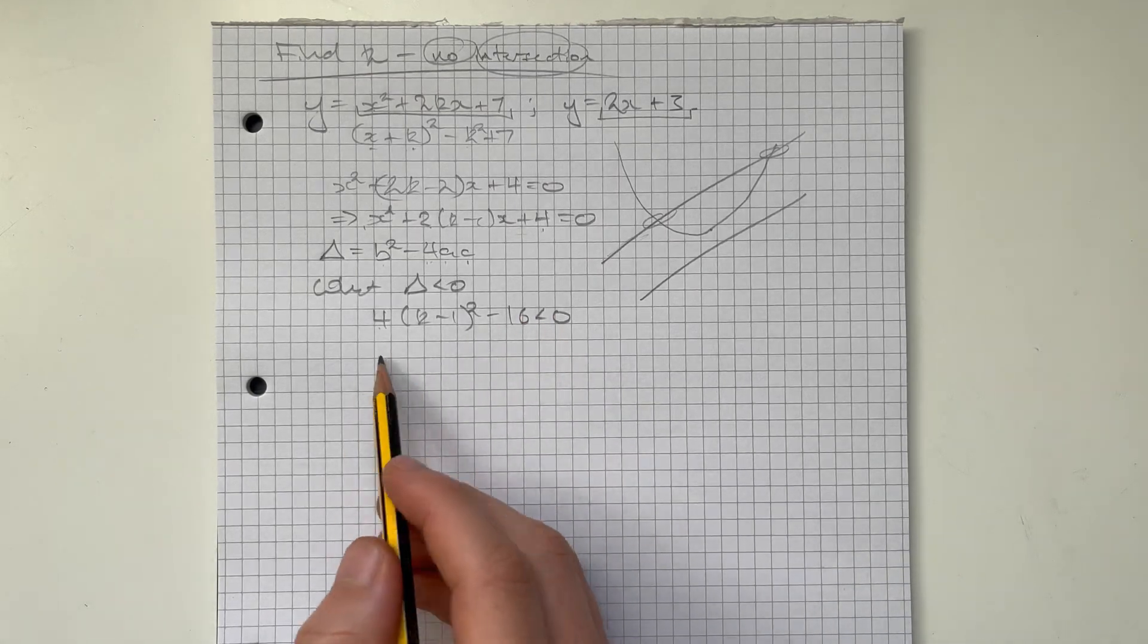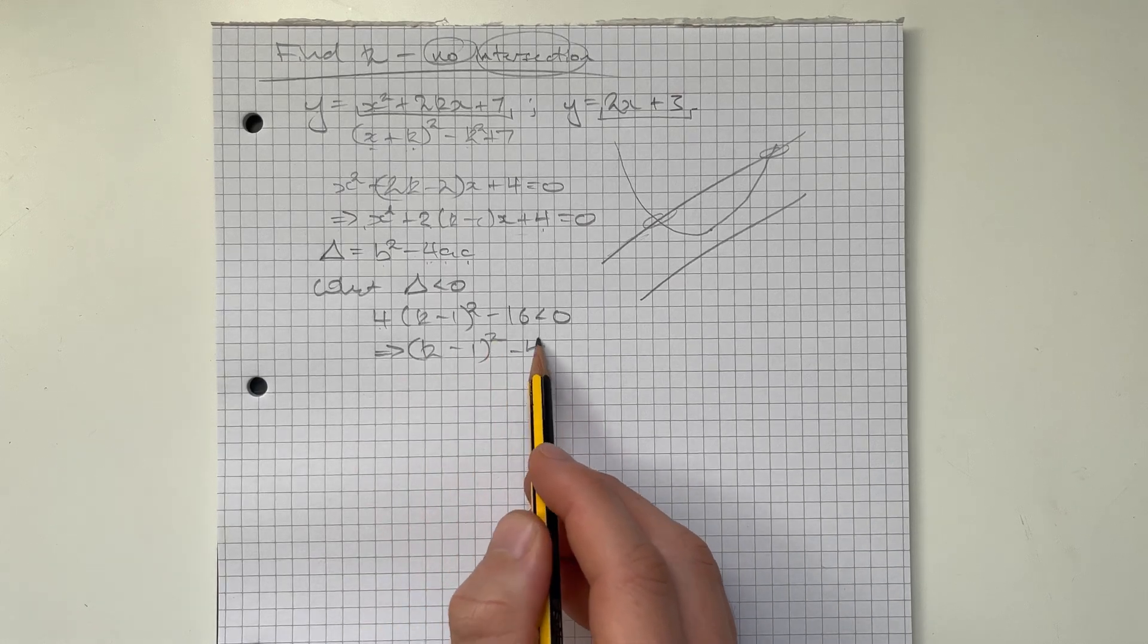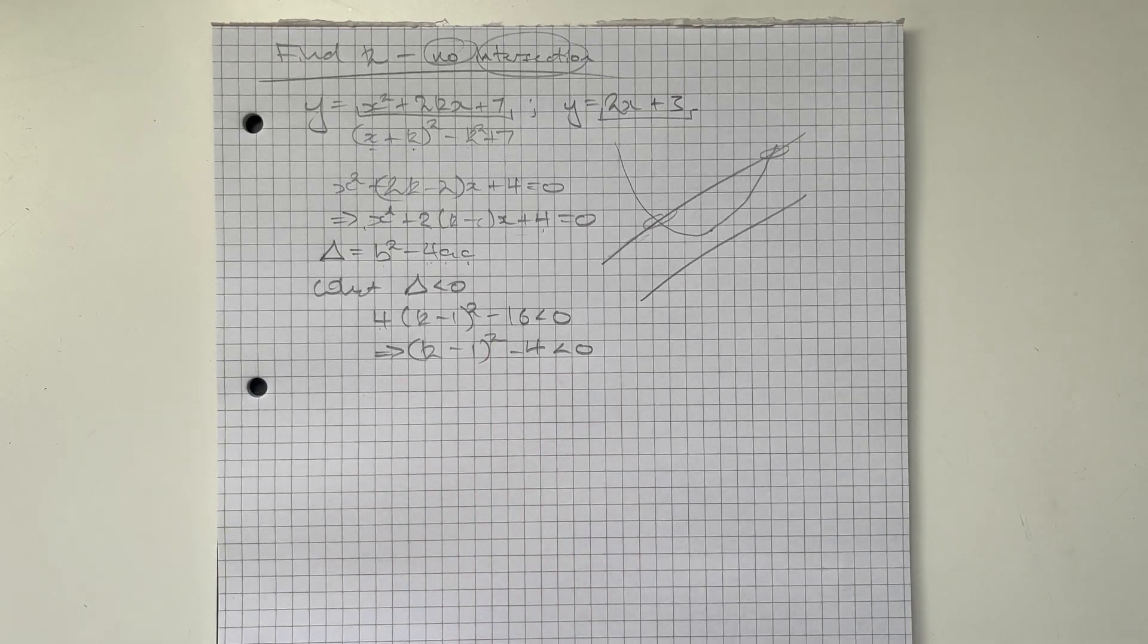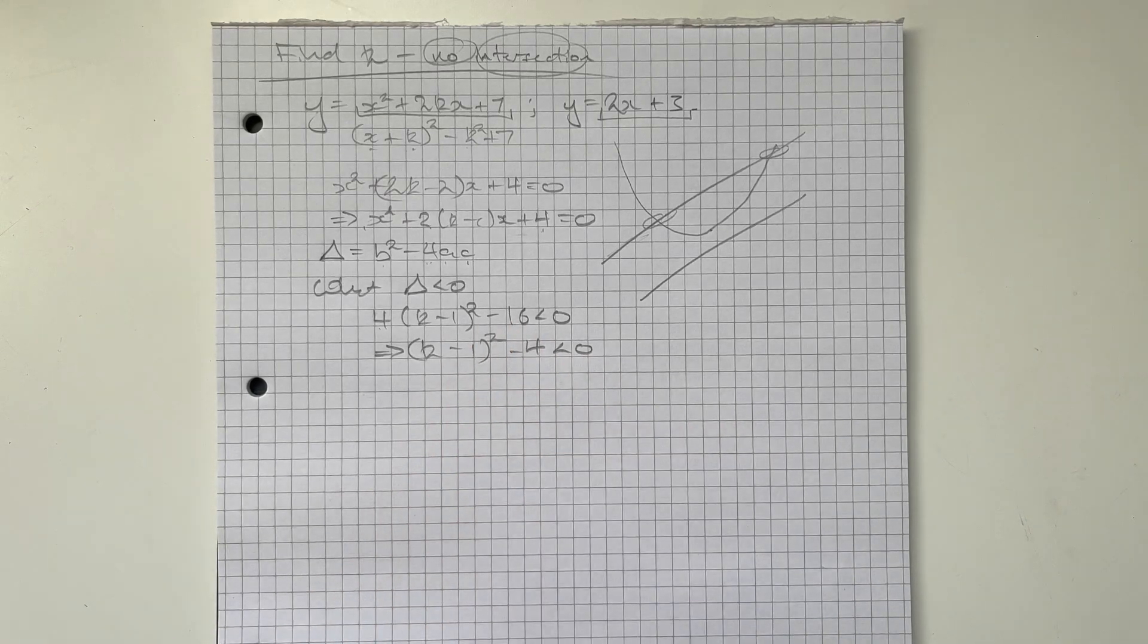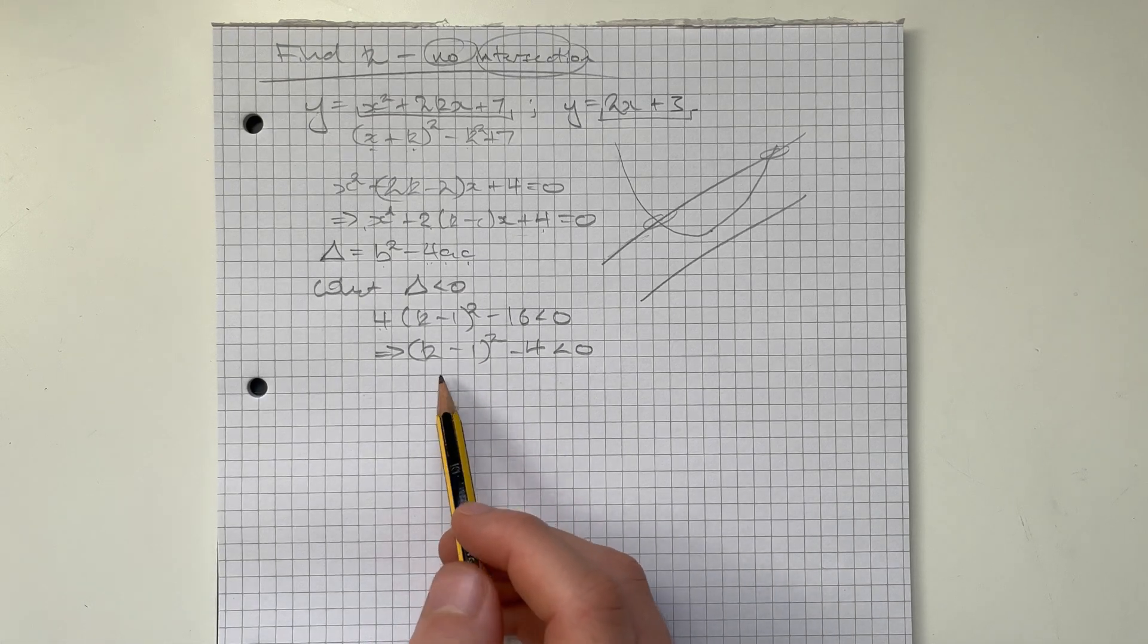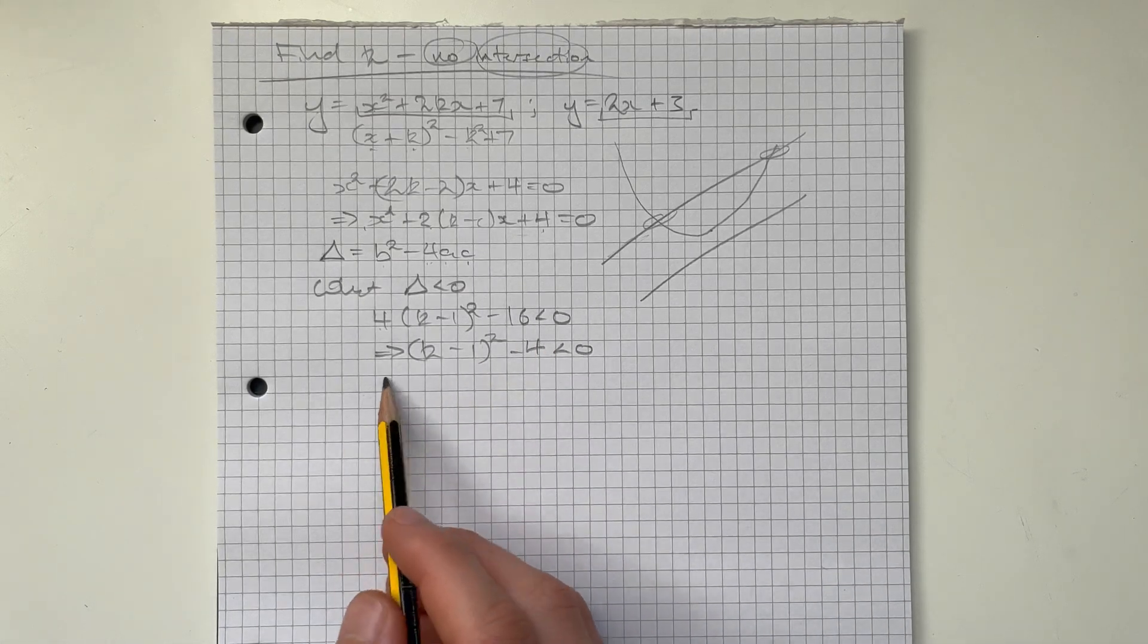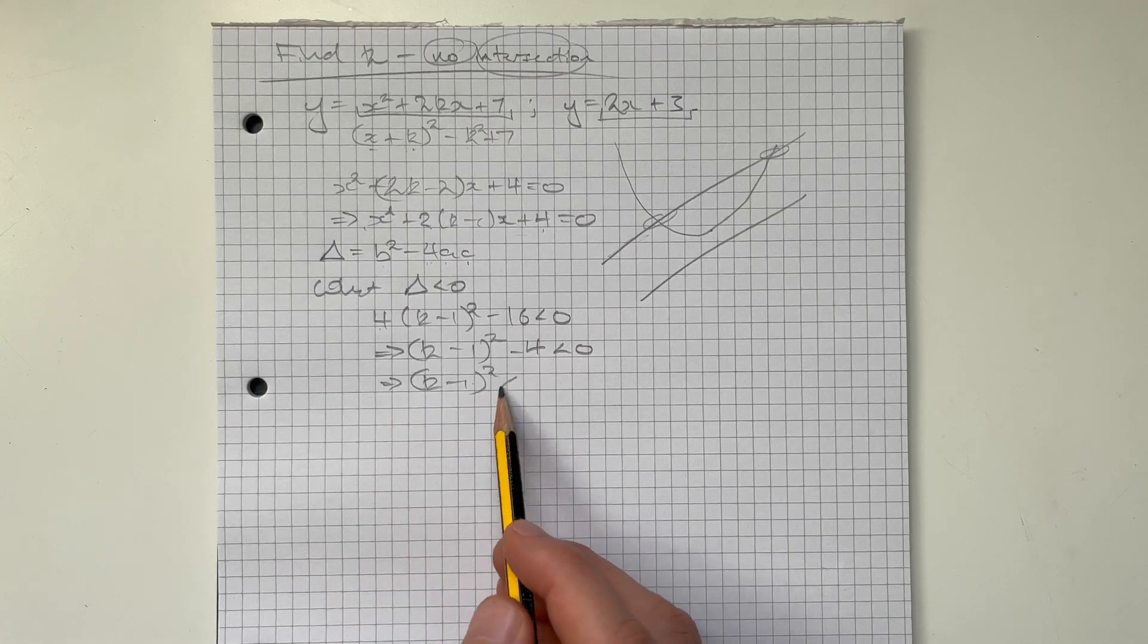We can divide off by 4. So we're left with k minus 1 squared minus 4 is less than 0. And now sometimes you'd be tempted to expand this out and try and solve it as a quadratic. We could do that, but we could also note that this is in complete the square form. So we can just rearrange straight away. So what we have then is that k minus 1 squared is less than 4.